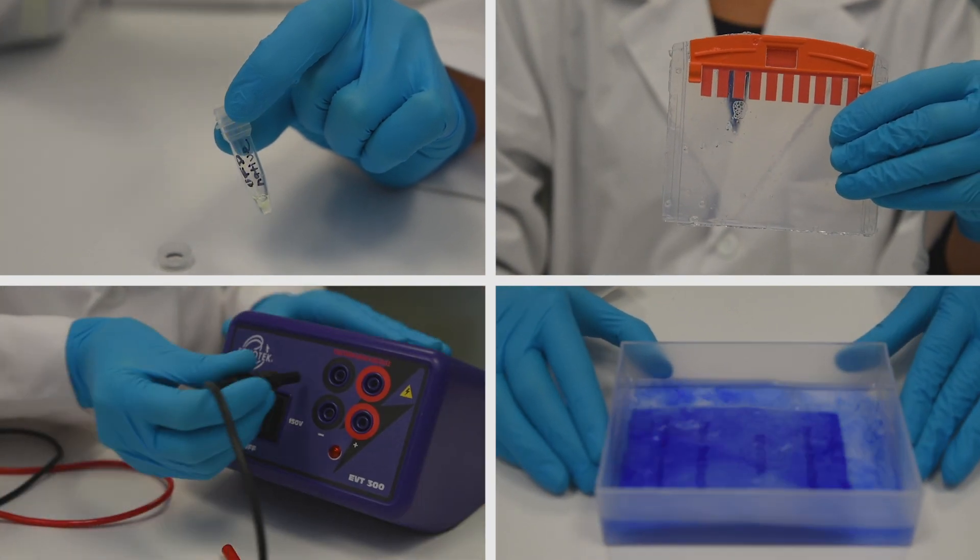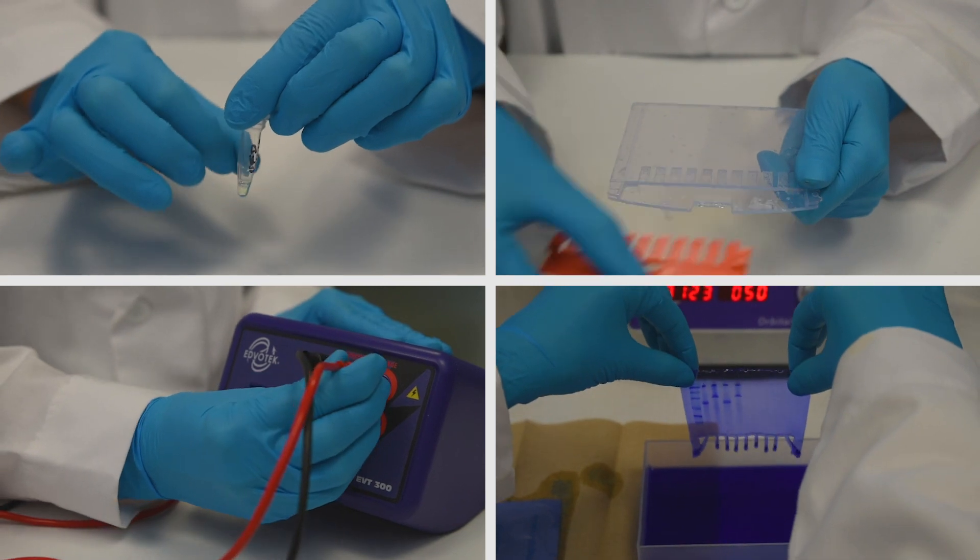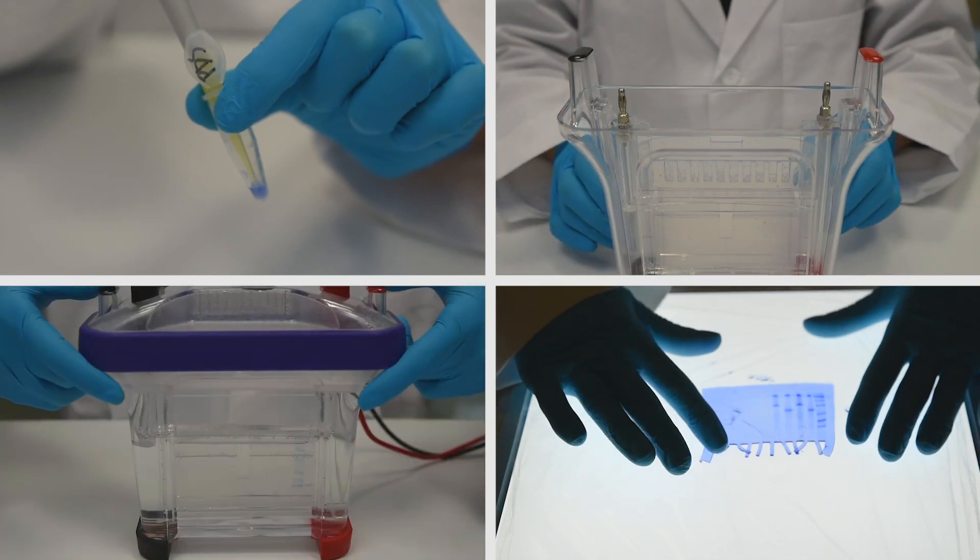Native samples will be mixed with glycerol, while denatured samples will be mixed with a denaturing solution and boiled. Both samples will then be run on an SDS PAGE gel and analyzed.